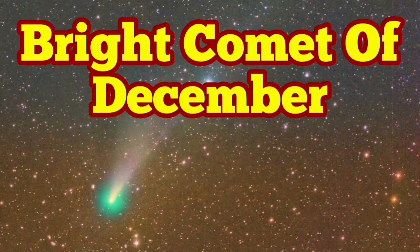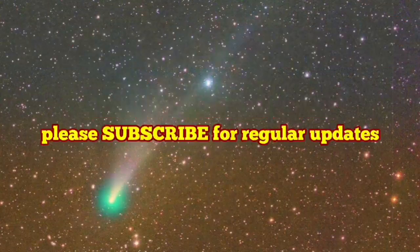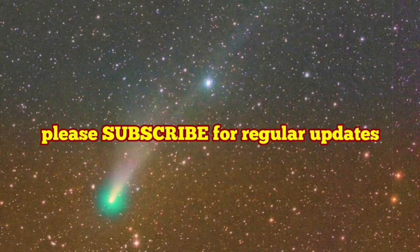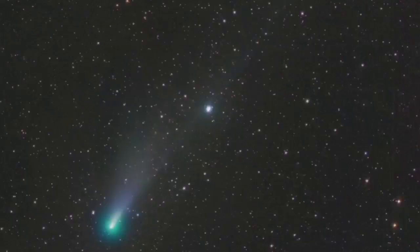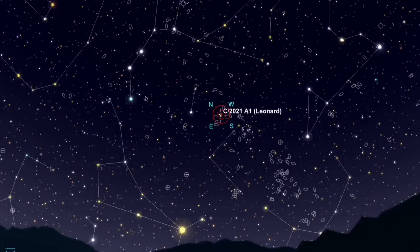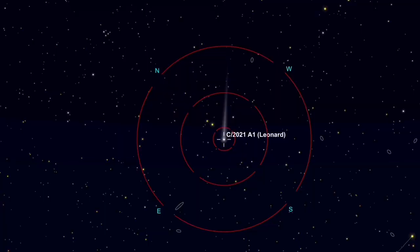A bright comet will be visible in December to the naked eye. This is Comet C2021 A1-Leonard, and it's currently in the Canes Venatici constellation. You can see the Telrad marker.